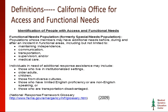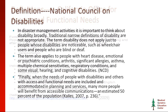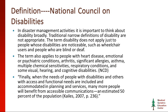California has an Office for Access and Functional Needs with a tremendous amount of resources. Their definition deals with those experiencing issues with maintaining independence, communication, transportation, supervision, and medical care. It also includes those living in institutional settings, older adults, children, the diversity of cultures, language issues where English is a second language, and those who are transportation disadvantaged.